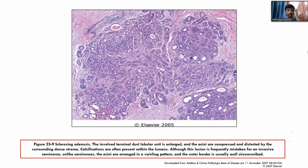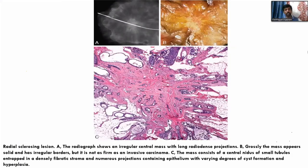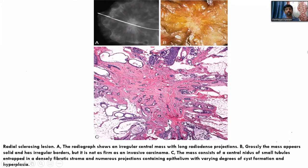Radial scar, also called radial sclerosing lesion, even radiologically shows an irregular central mass. Grossly the mass appears solid with irregular borders — generally a circumscribed lesion means benign while irregular borders suggest an invasive lesion, so radial scar can look like invasive carcinoma on gross examination. Histologically it shows a central nidus with small tubules entrapped in a dense fibrotic stroma — all the entrapped tubules are benign, which is how you differentiate it from invasive carcinoma.